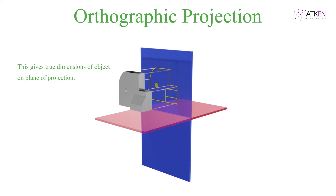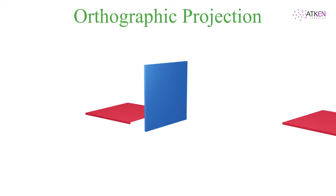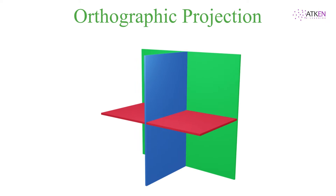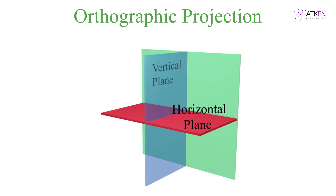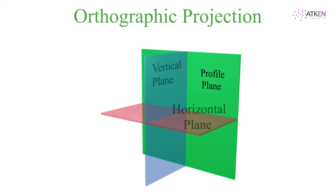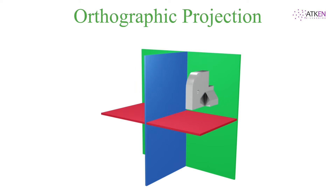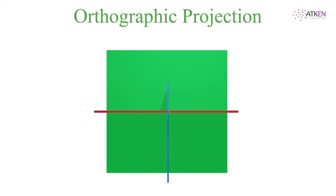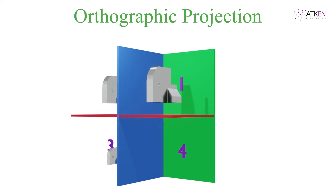An orthographic projection generally involves the use of three orthogonal planes: vertical plane, horizontal plane, and a profile plane. The objects are projected on these planes in order to obtain their true shape and size. The horizontal and vertical planes divide the space into four quadrants, and an object can occupy any of the four quadrants.